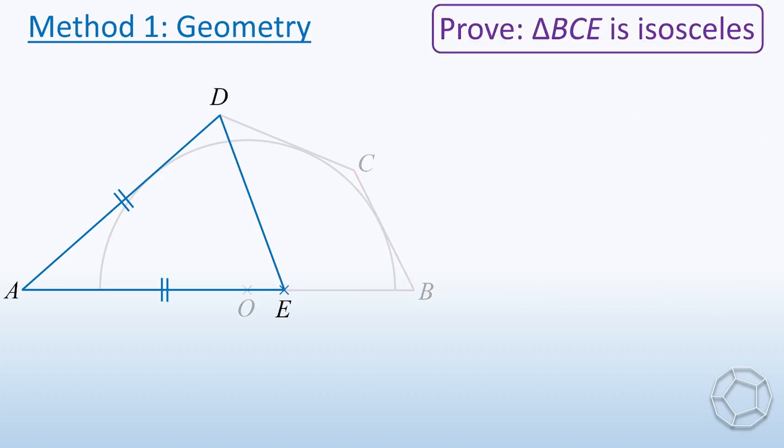Now, we focus on the blue triangle. Let angle E equal X. Because AD equals AE, angle D also equals X. We can easily get that angle A equals 180 degrees minus 2X.